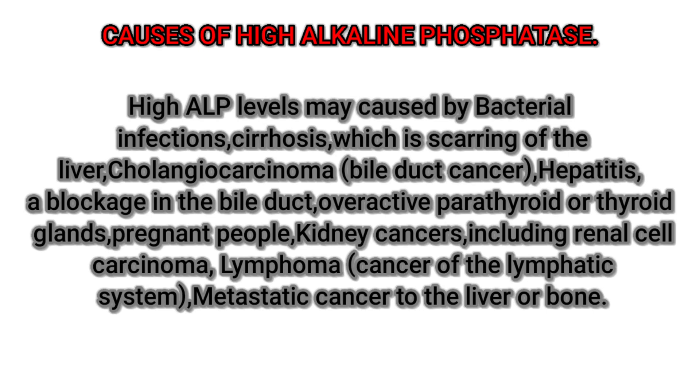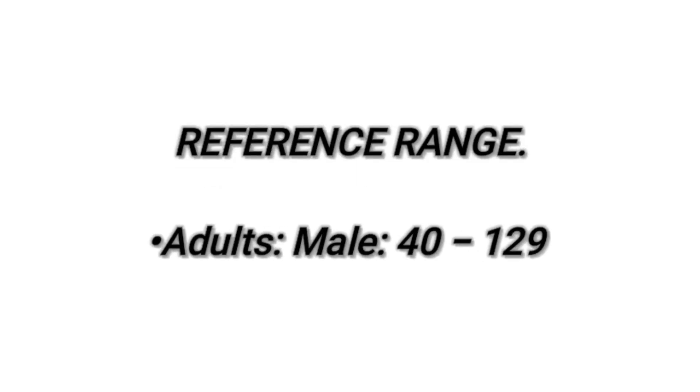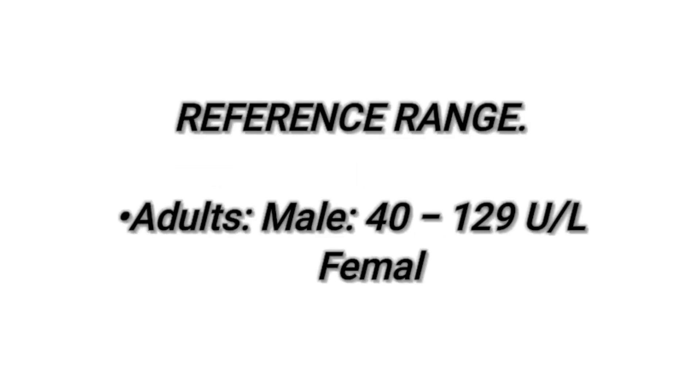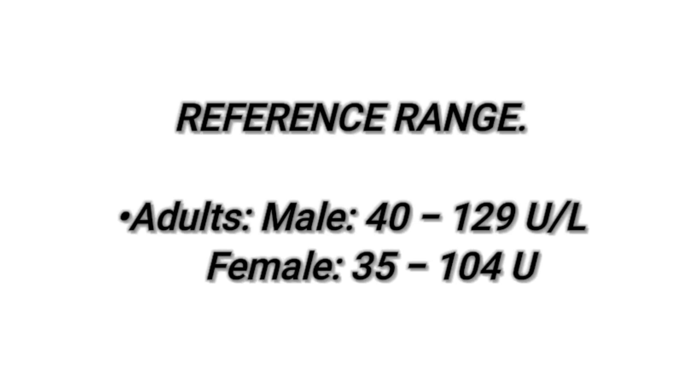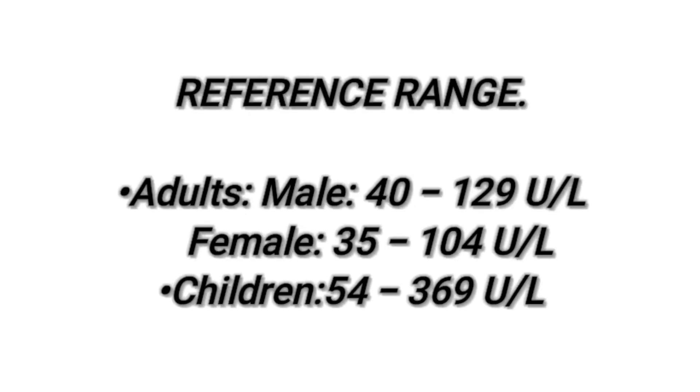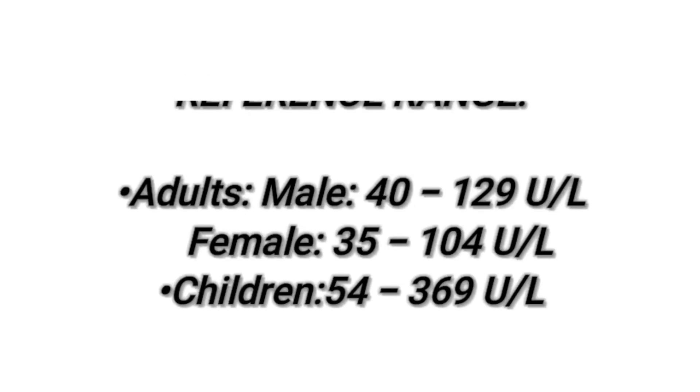Reference ranges for alkaline phosphatase: Adults male: 40 to 129 units per liter. Adult female: 35 to 104 units per liter. Children: 54 to 369 units per liter.